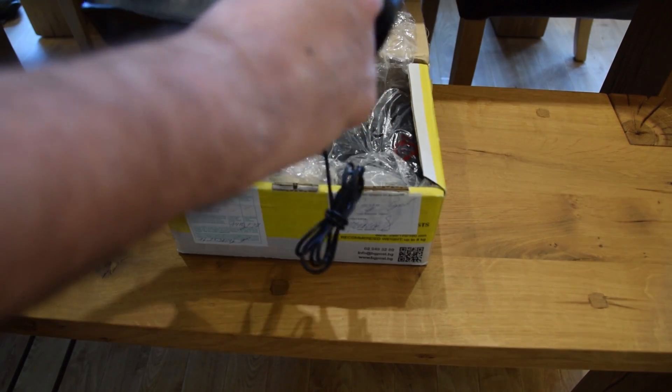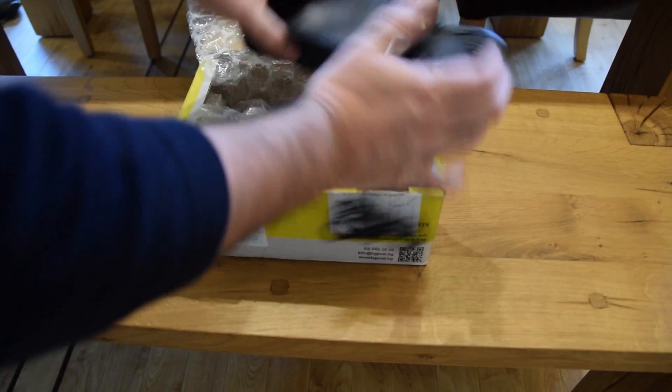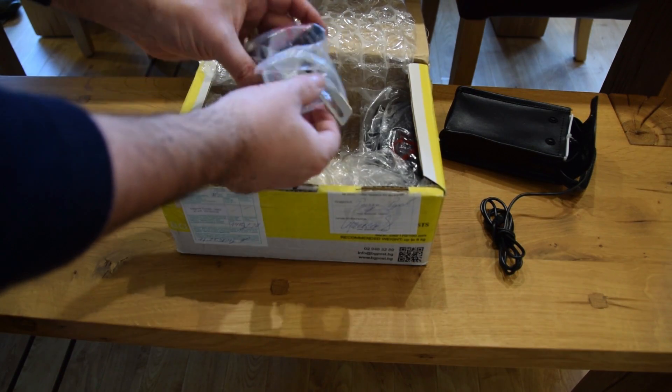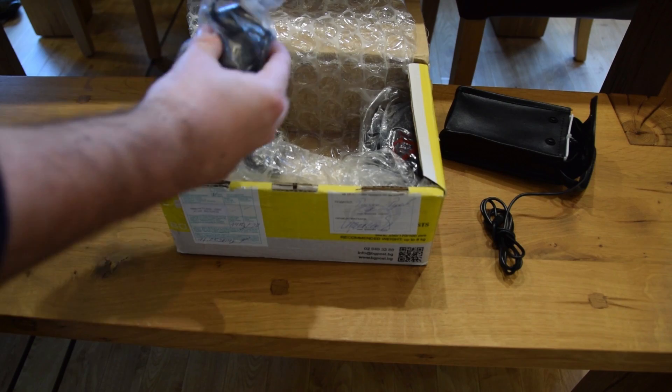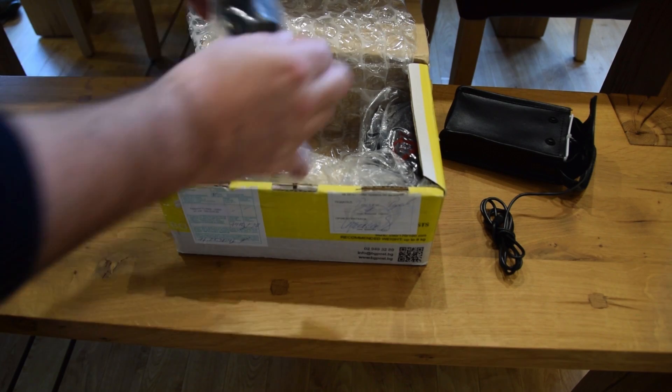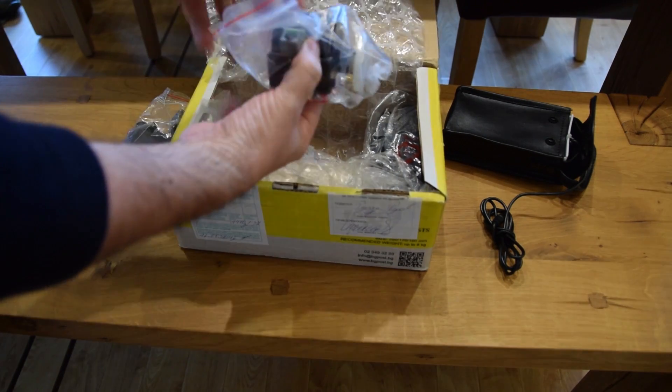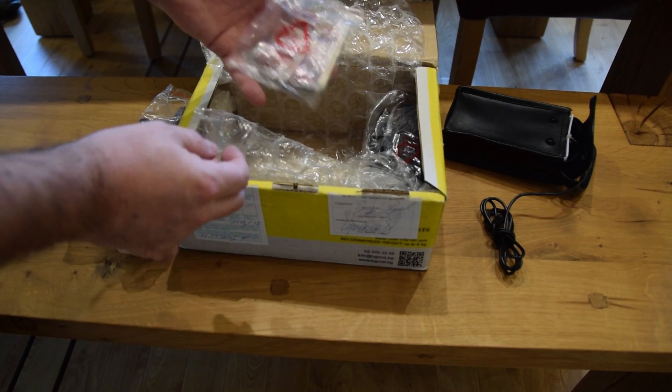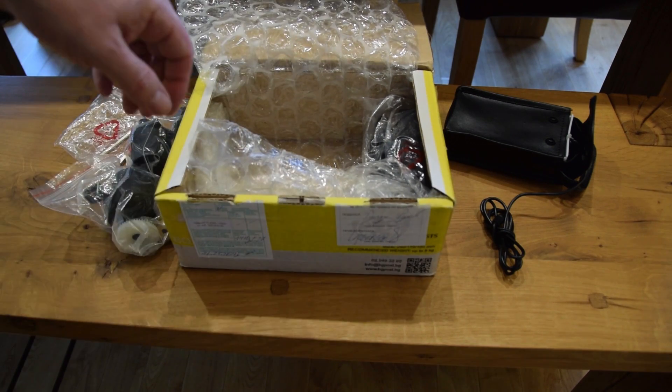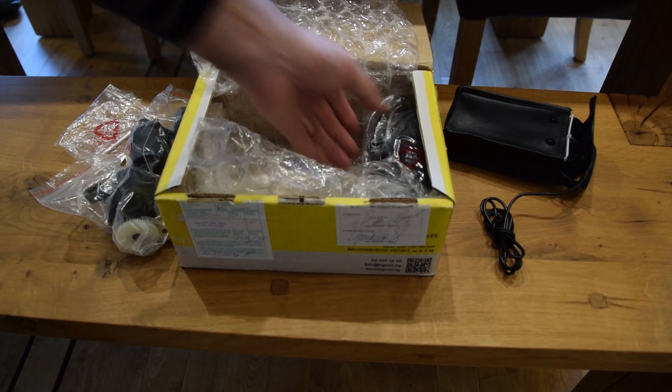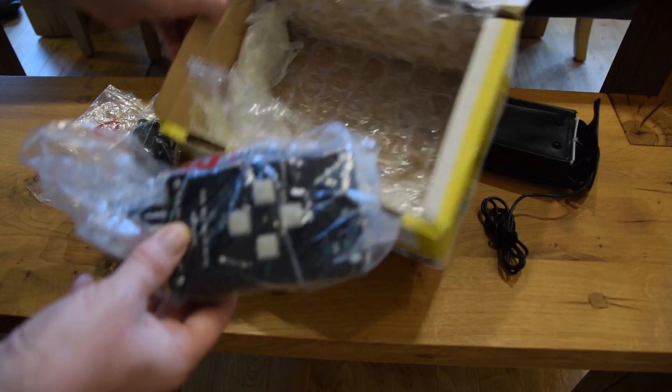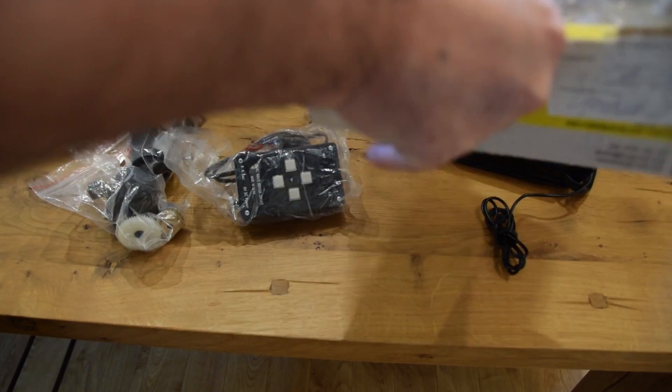This looks like the battery box. Looks good. One motor in the bag, and another motor. Set of tools. And the controller as well. That's it.